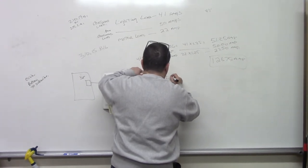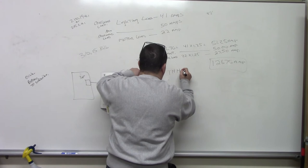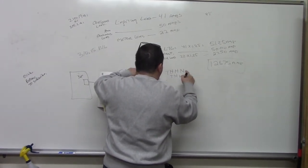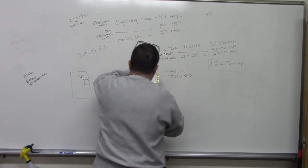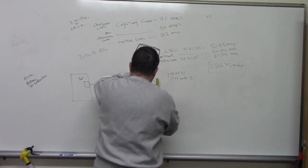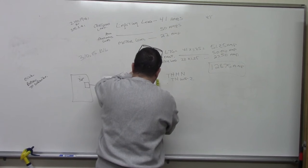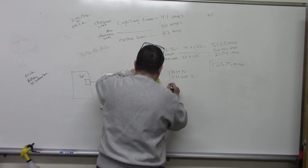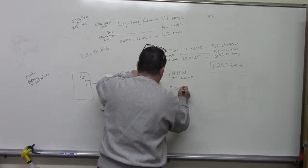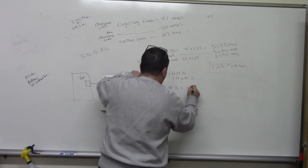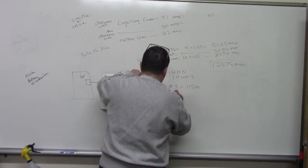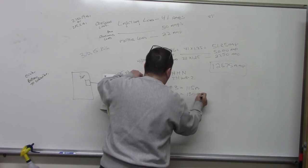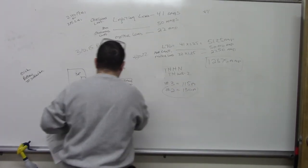We could actually use, say we're using THHN wire. Okay? Or THWN-2. This means 90 degrees also. So we go to 90-degree column. And right now we're looking and we will find that a number 2 wire, a number 3 wire is equal to 115 amps. And a number 2 wire is equal to 130 amps. So we're going to use the number 2 wire for this.